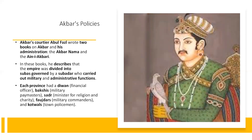Now we are going to focus on Akbar's policies. Akbar was one of the greatest administrators of the time and one of the best in the Mughal dynasty. Akbar's courtier Abul Fazal wrote two books on Akbar and his administration — the Akbar Nama and the Ain-i-Akbari. In these books, he described that the empire was divided into Subhas, governed by Subedars, who carried out military and administrative functions.